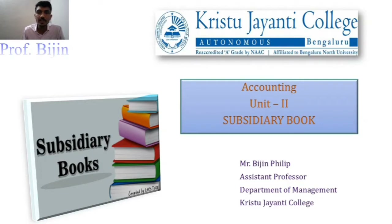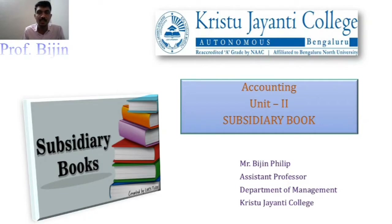Before moving to the concept of subsidiary books, we have to think about why companies maintain them — that is because of the drawbacks of the general journal. In an organization, we may have more than thousands of transactions all recorded in the general journal, and finding any particular transaction for verification becomes very difficult.